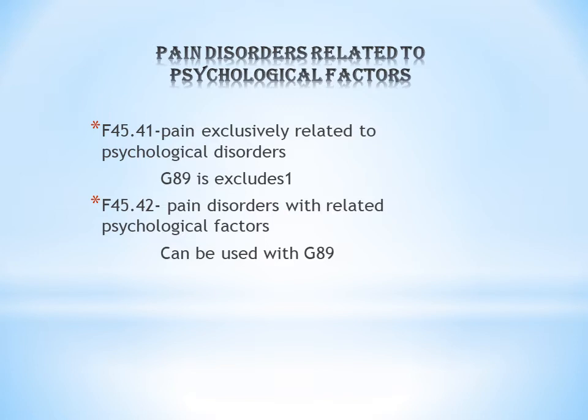Physical pain is caused physically — that is, pain caused due to some injuries or trauma. Psychological pain can otherwise be called emotional pain or mental pain; there is no actual physical pain. So F45.41 means there is only psychological pain, no physical pain. The second code, F45.42, means pain disorders with related psychological factors — the patient is having both physical pain as well as psychological pain.